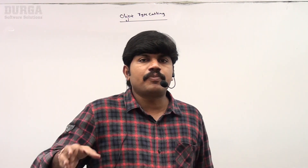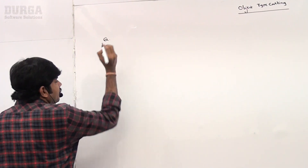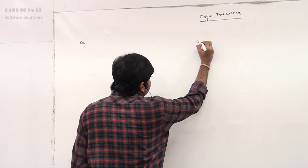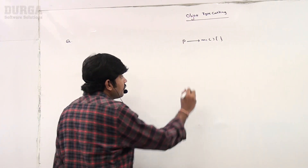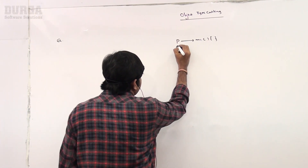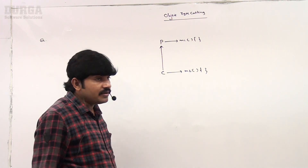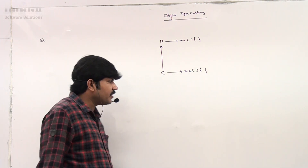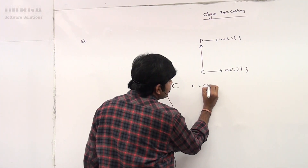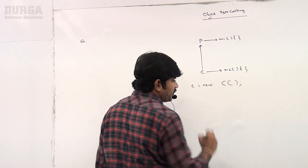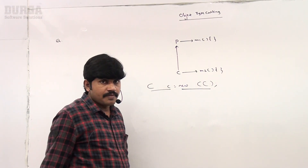Now let's look at possible practice questions for the exam. Here I am taking a Parent class that contains M1 method, and a Child class that contains M2 method. I am creating a child class object: Child C = new Child(). This is a Child type reference variable.